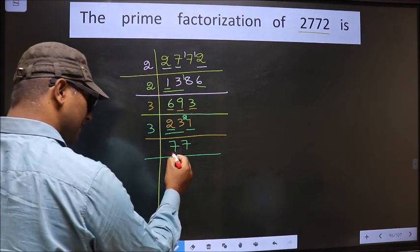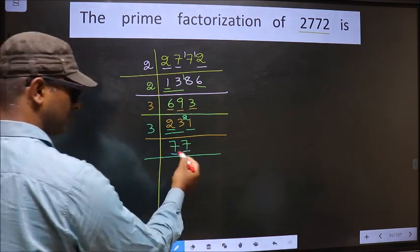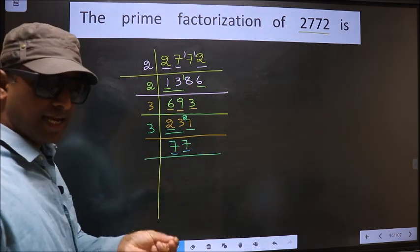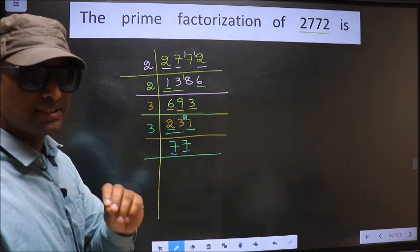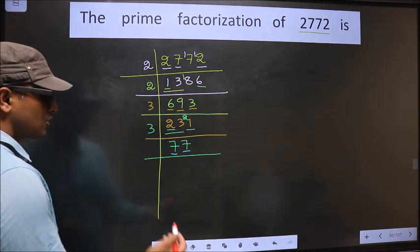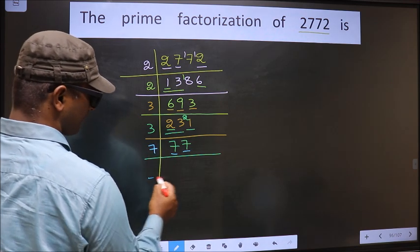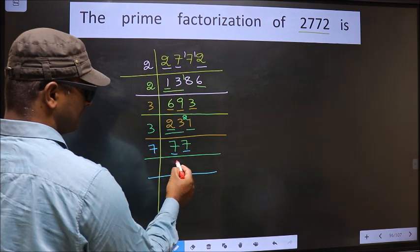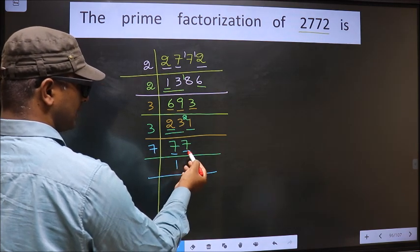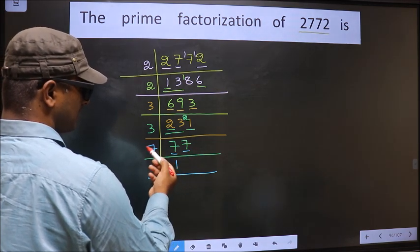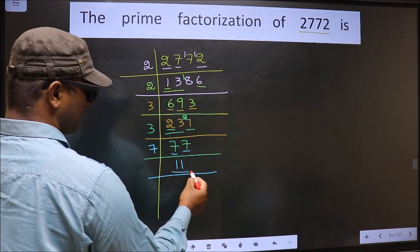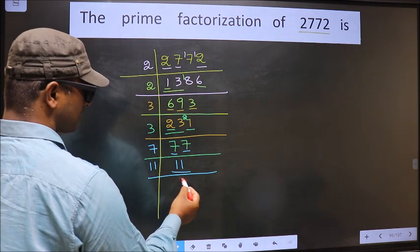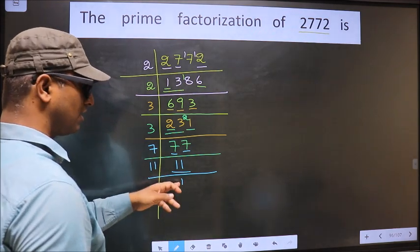Now here each digit is 7, and most importantly 7 is a prime number. So we directly take 7 here. The first number is 7 — when do we get 7 in the 7 table? 7×1=7. The other number 7 — when do we get 7 in the 7 table? 7×1=7. Here we got 11. 11 is a prime number, so we take 11×1=11. We got 1 here.